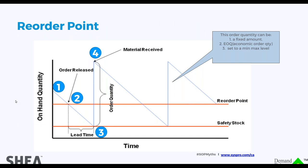Let's talk about reorder point — my favorite. It's probably still the most widely used. The inventory goes down, hits a trigger point, inventory comes in and brings it back up — down and up, down and up — called the sawtooth. And then we have EOQ, economic order quantity, which has been around since Henry Ford's days, and is the most standard method for calculating reorder points.